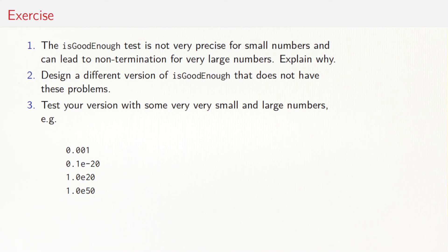So can you explain why that is? Why is the is good enough test not precise for small numbers and why can it lead to non-termination for very large numbers? And secondly, can you define a different version of is good enough that doesn't have these problems? Here are some numbers to test your version, some very small and some large numbers.